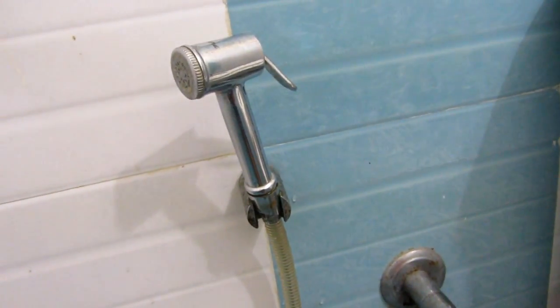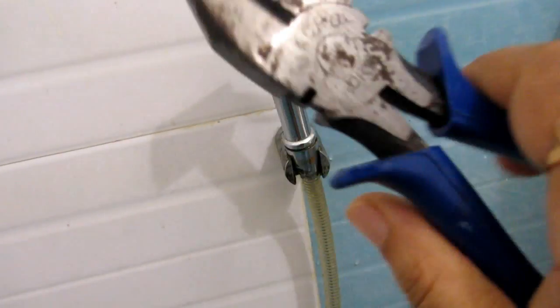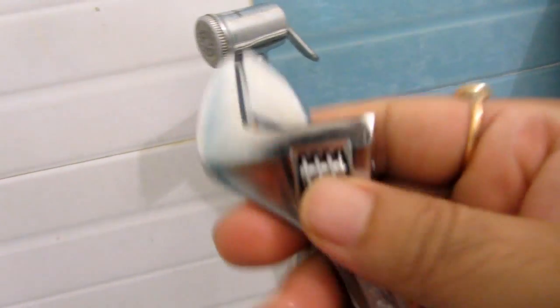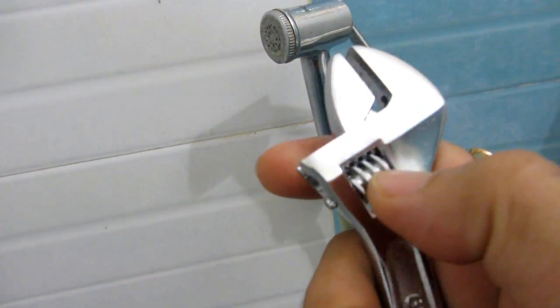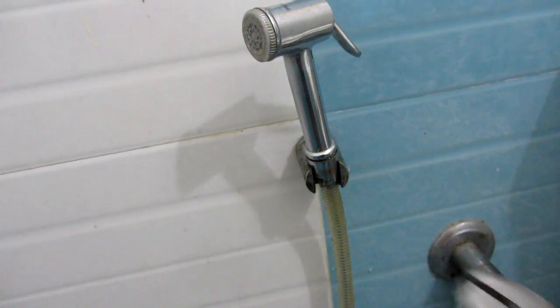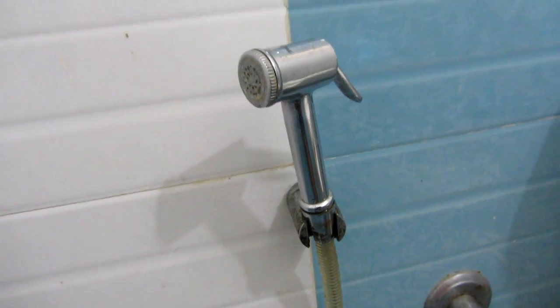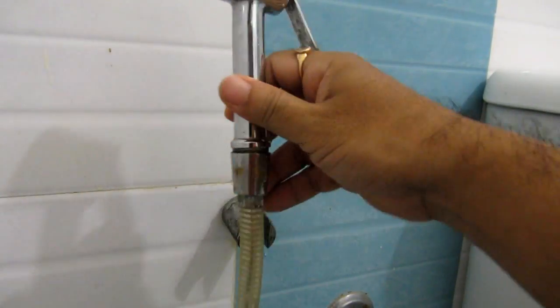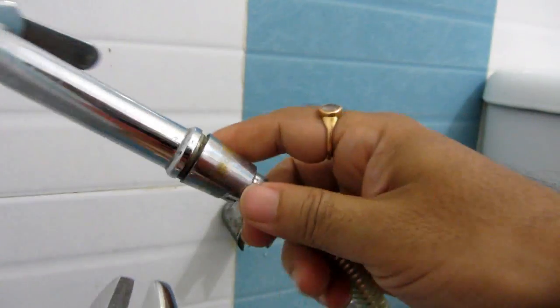The tools that you need to open this are pliers—you can use any pliers—and you might need a wrench to open this particular faucet. Now let's open this faucet and see where exactly it's causing the problem.